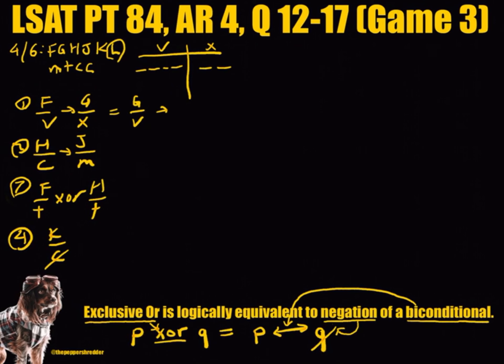Then, we can take the logical equivalence of rule 3. We know that rule 3 is an exclusive disjunctive or an exclusive or statement. An exclusive or statement is logically equivalent to the negation of a biconditional statement. Rule 3 means that if F is grouped with T, then H must not be grouped with T. And if H is not grouped with T, then F must be grouped with T.